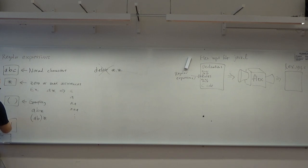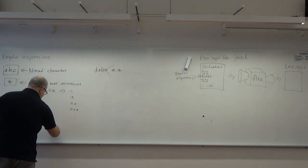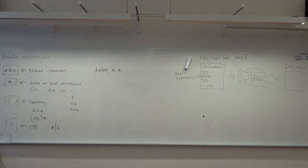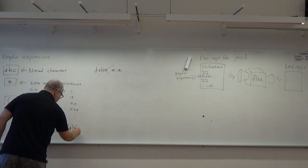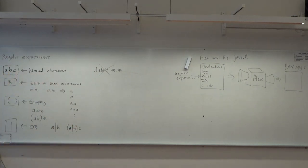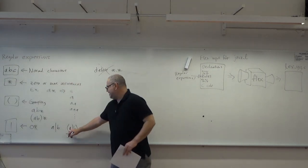You have the OR operator, meaning one or the other. So if you have a|b, it's either a or b. You can combine this with parentheses. For example, (a|b)c means either a or b, followed always by a c. Can it be both a and b followed by c? No, because this is one of either a or b, not both.